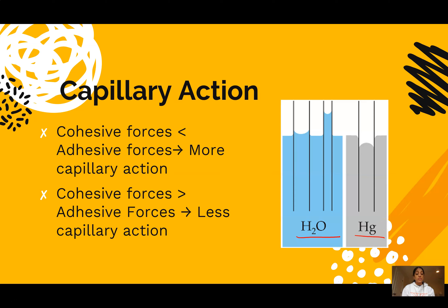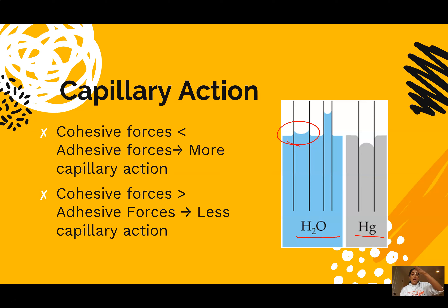Let's look at water and mercury — both in the liquid phase, both displaying some capillary action. Mercury has less capillary action than water because mercury rose less in the glass tube. Also notice the shape of the meniscus: water and most polar substances have a concave meniscus, while mercury uniquely has a convex meniscus. For measurement purposes, we still measure at the meniscus regardless — a mercury measurement is taken at the top of the curve, a water measurement at the bottom.